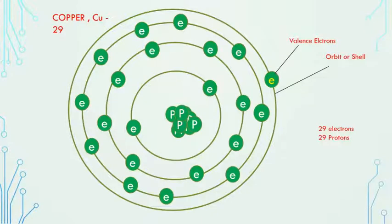This is the copper atomic structure which has around 29 electrons. It means 29 protons also inside the nucleus. So 29 electrons, 29 protons. The outer orbit has only one electron which is known as valence electrons.